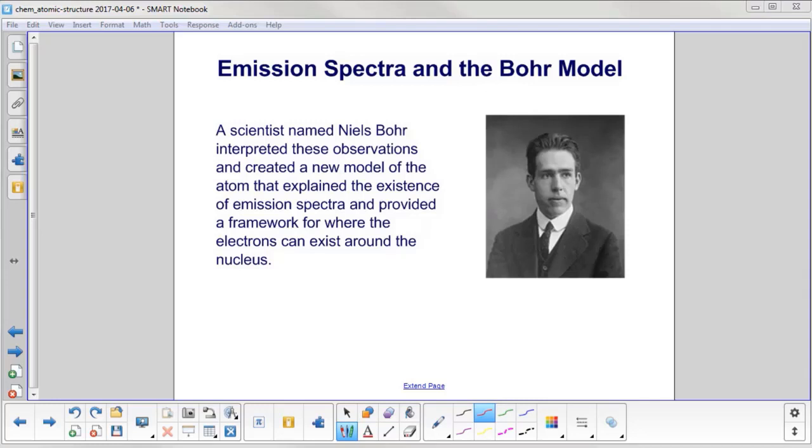Niels Bohr interpreted these observations and created a new model. Notice, the observations were not changed, you needed a new model. And this new model of the atom explained the existence of the emission spectra, the different colored light coming out, and provided a framework for where the electrons can exist around the nucleus.